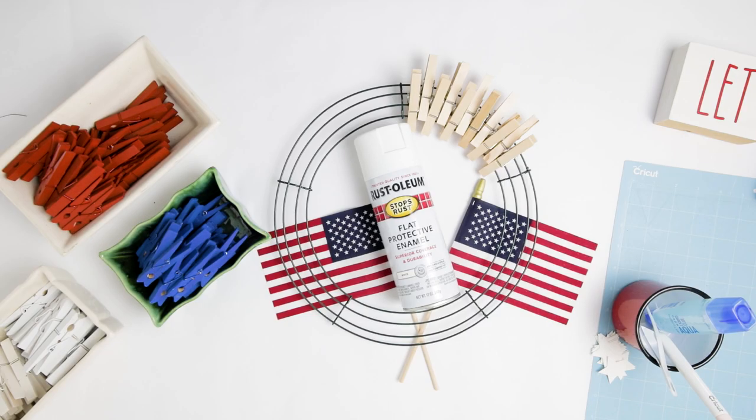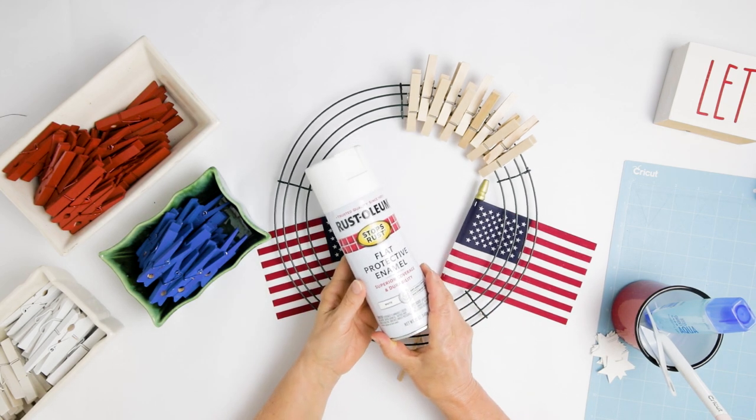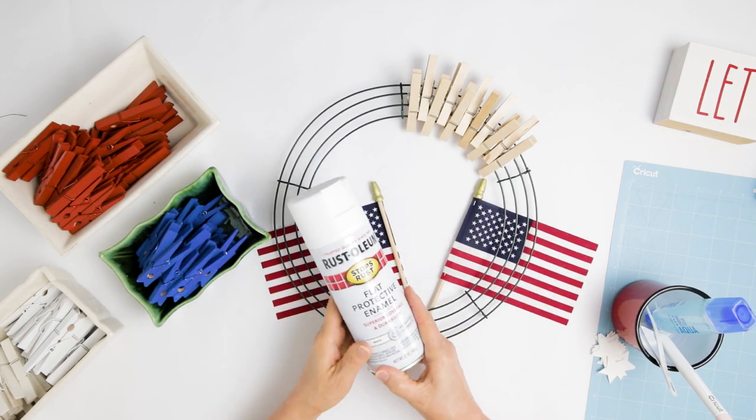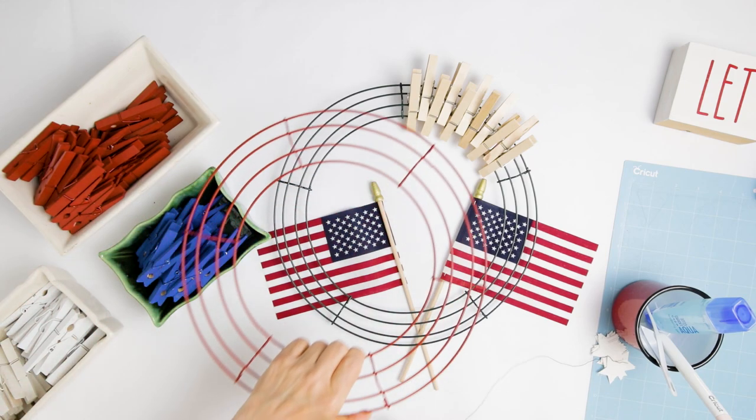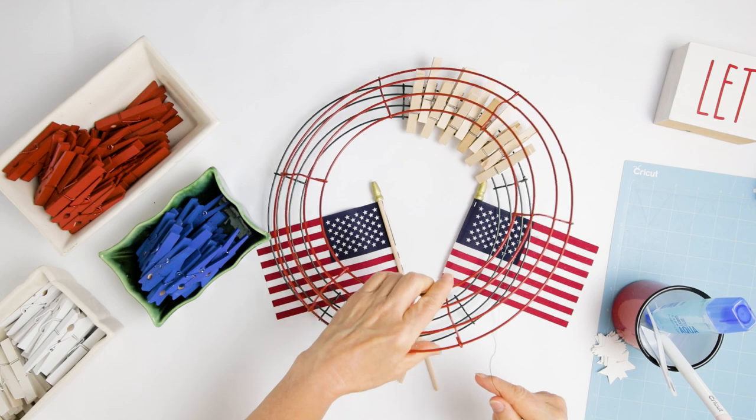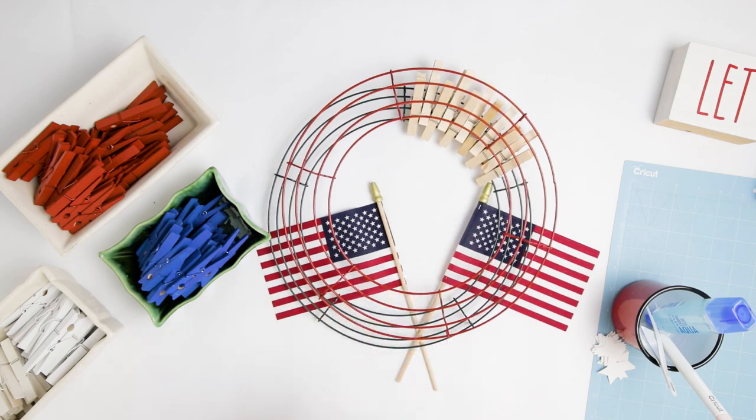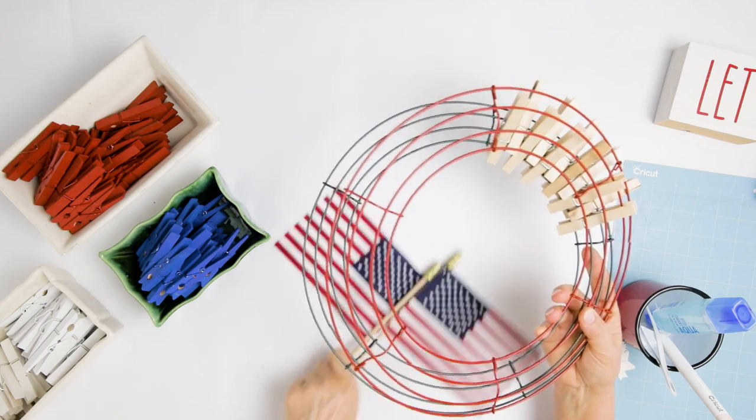Alright now that we've got our clothespins all painted and dry, I just wanted to show you I love this Rust-Oleum paint and I also wanted to discuss about this form. This is a 12 inch wire form for a wreath. It was green to begin with and I used a little bit of red spray paint, hung it in a tree and gave it a spray.